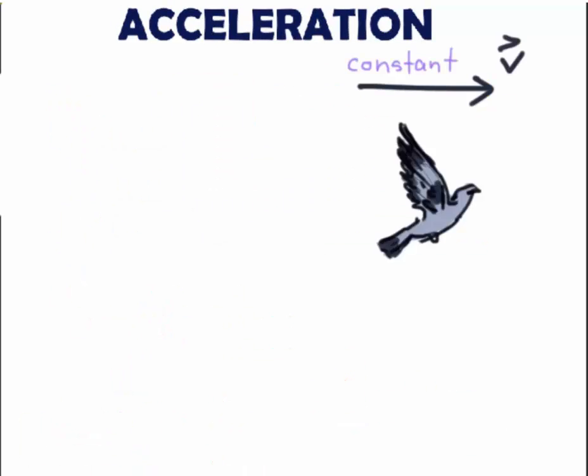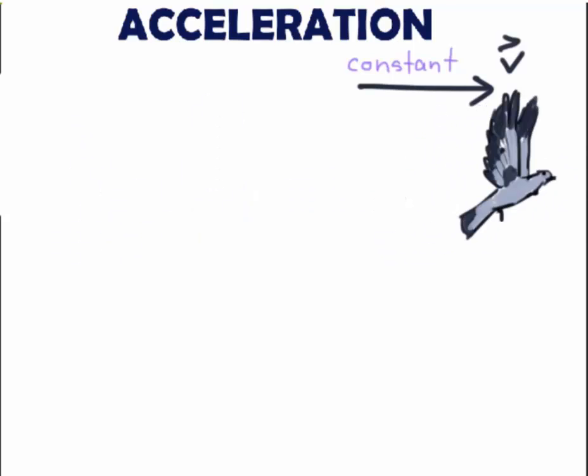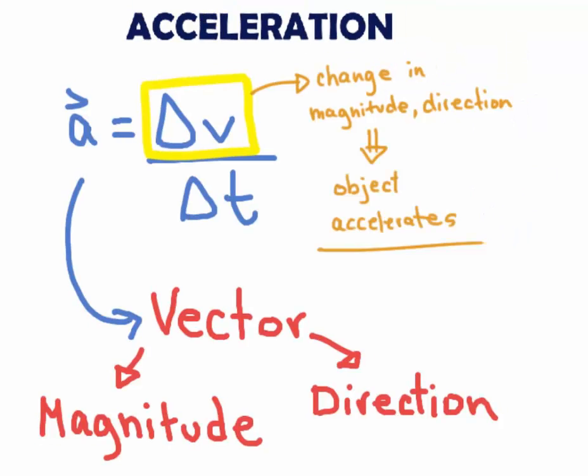If a bird flies at constant speed on a straight line it does not accelerate because it does not speed up, slow down or change its direction.